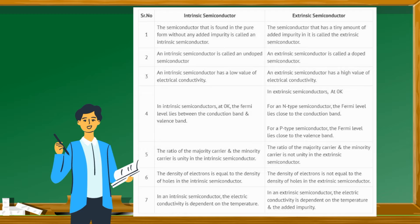Number 2: An intrinsic semiconductor is called an undoped semiconductor. An extrinsic semiconductor is called a doped semiconductor.